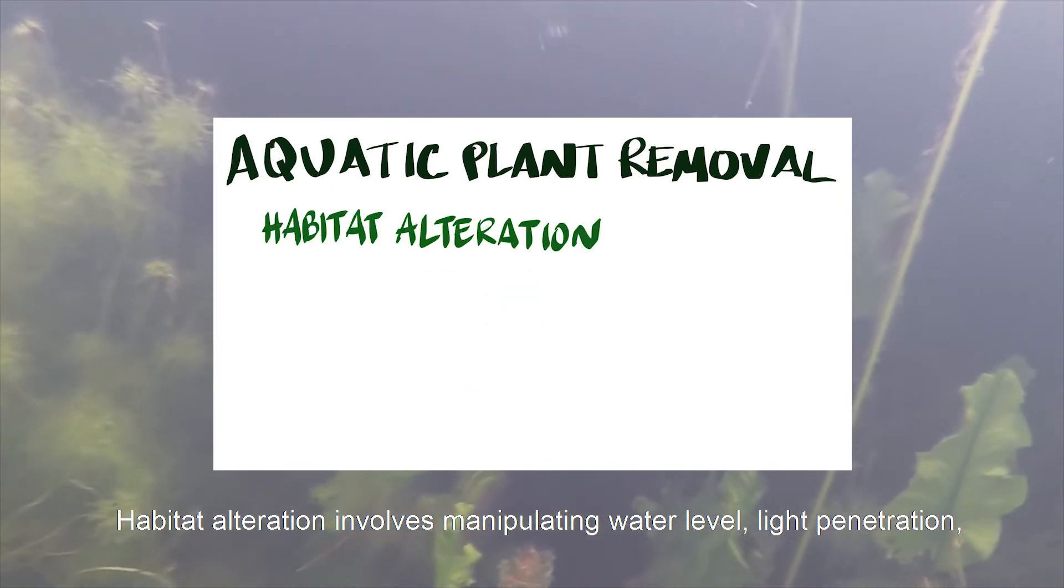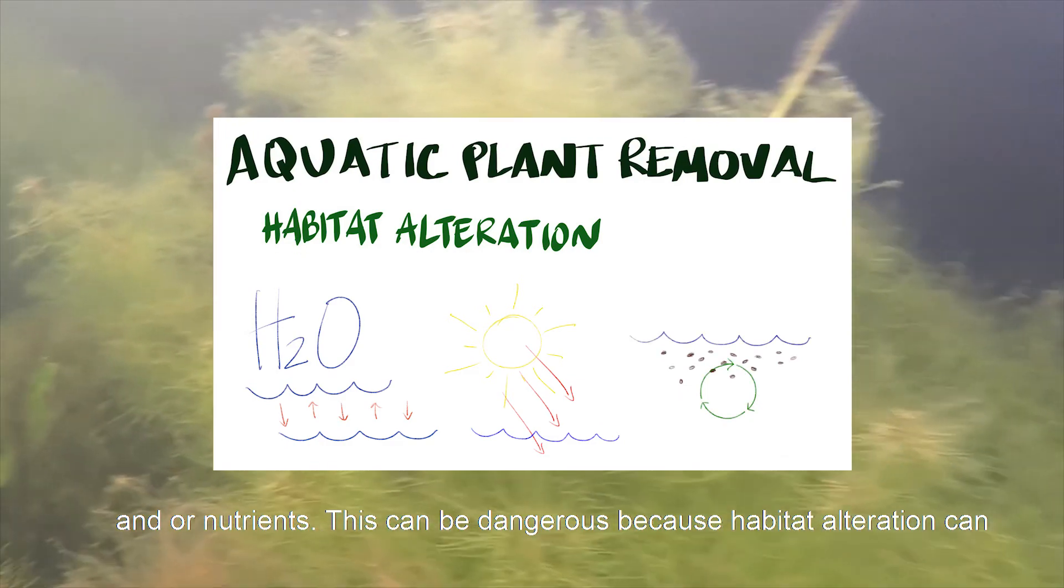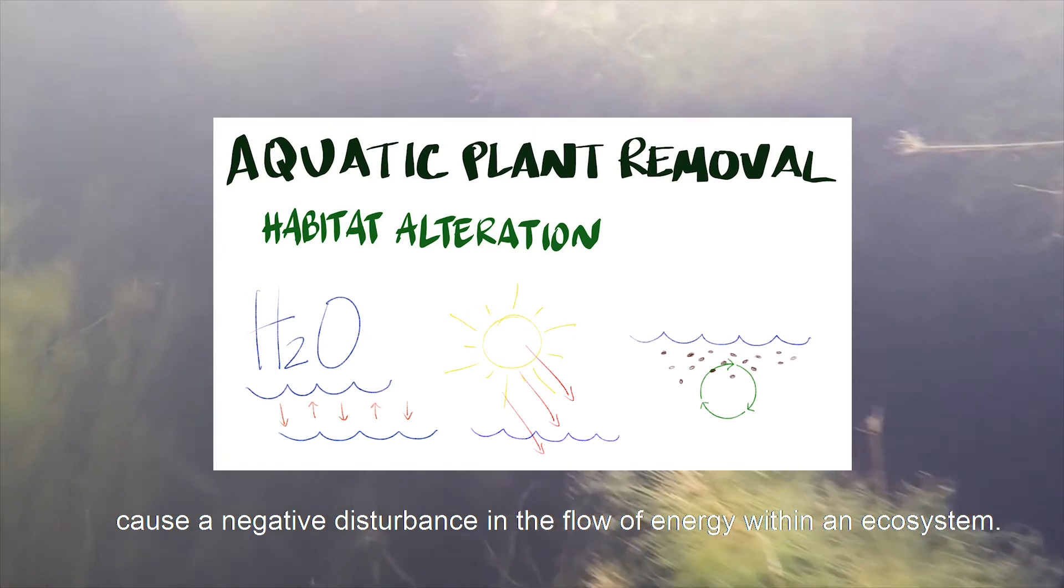Habitat alteration involves manipulating water level, light penetration, and or nutrients. This can be dangerous because habitat alteration can cause a negative disturbance in the flow of energy within an ecosystem.